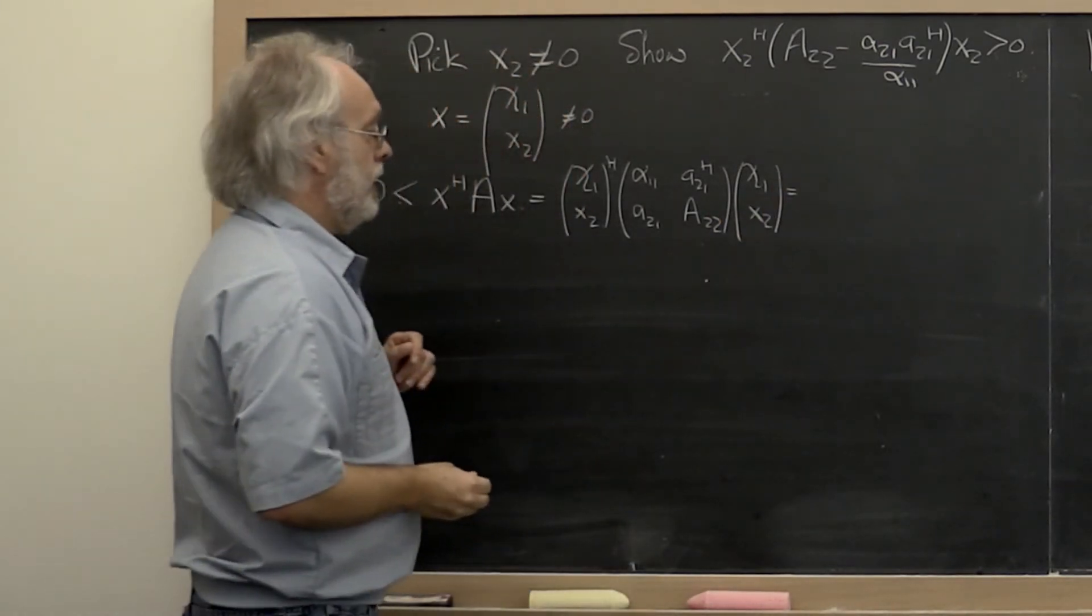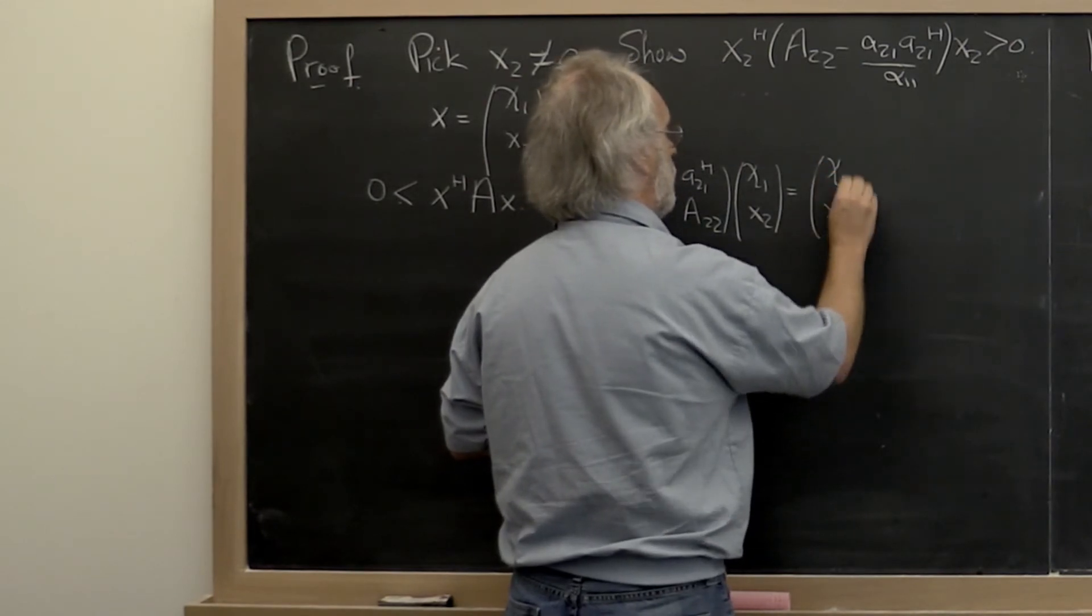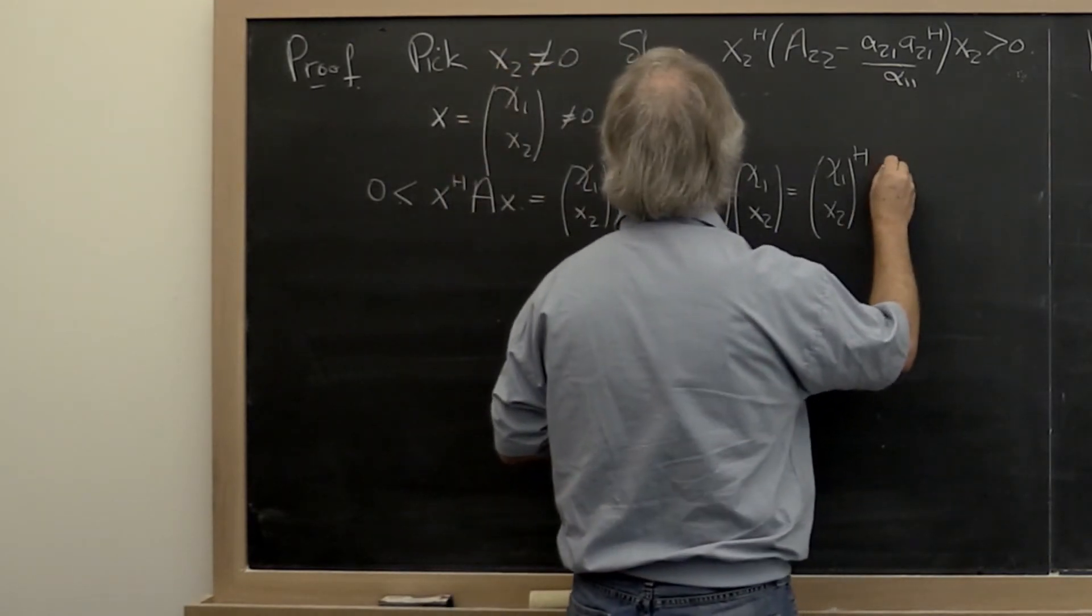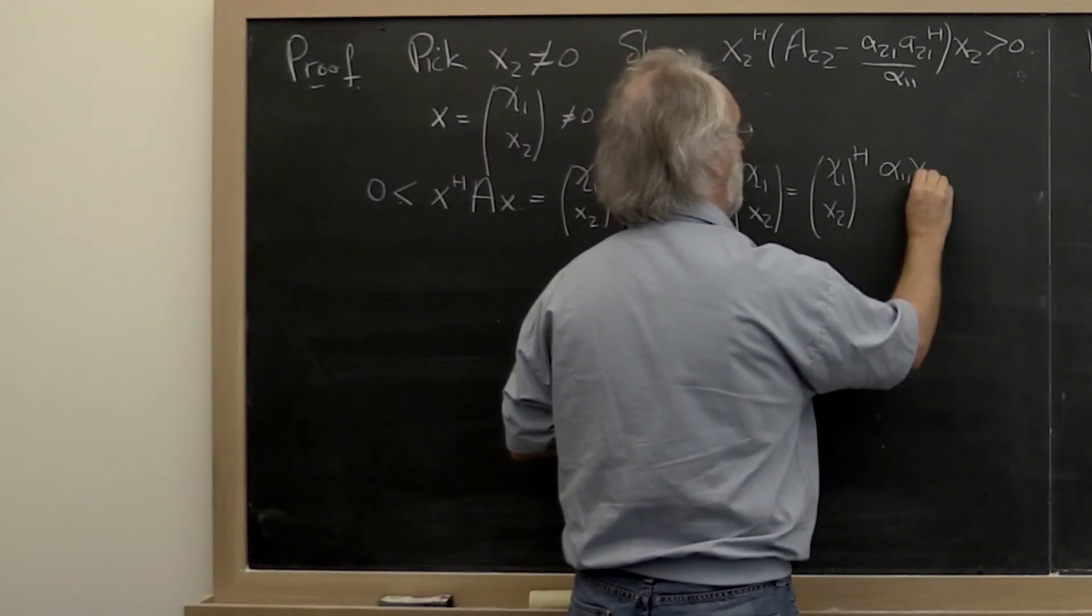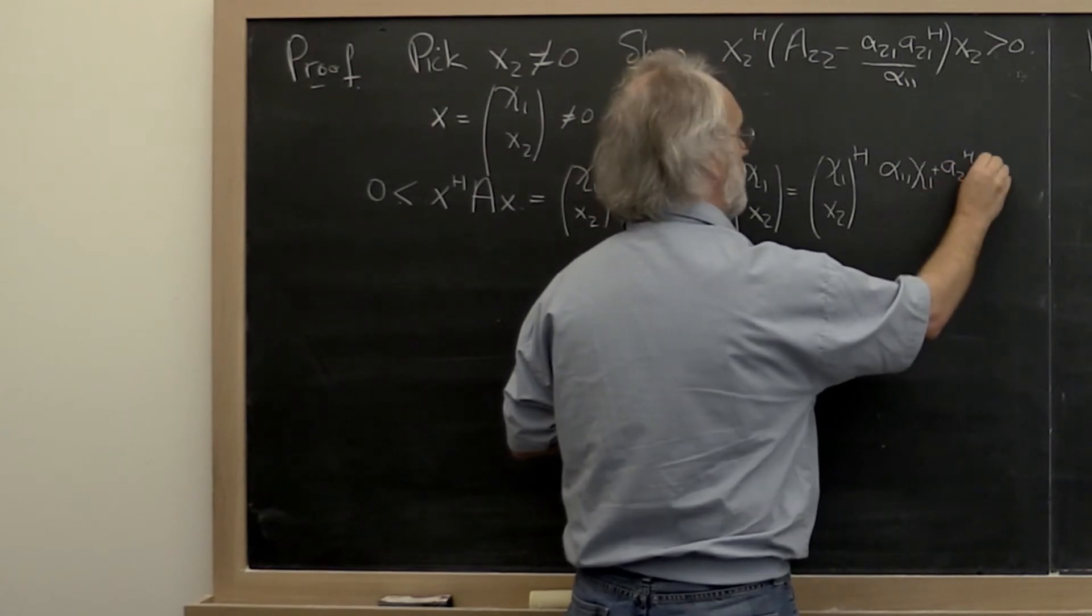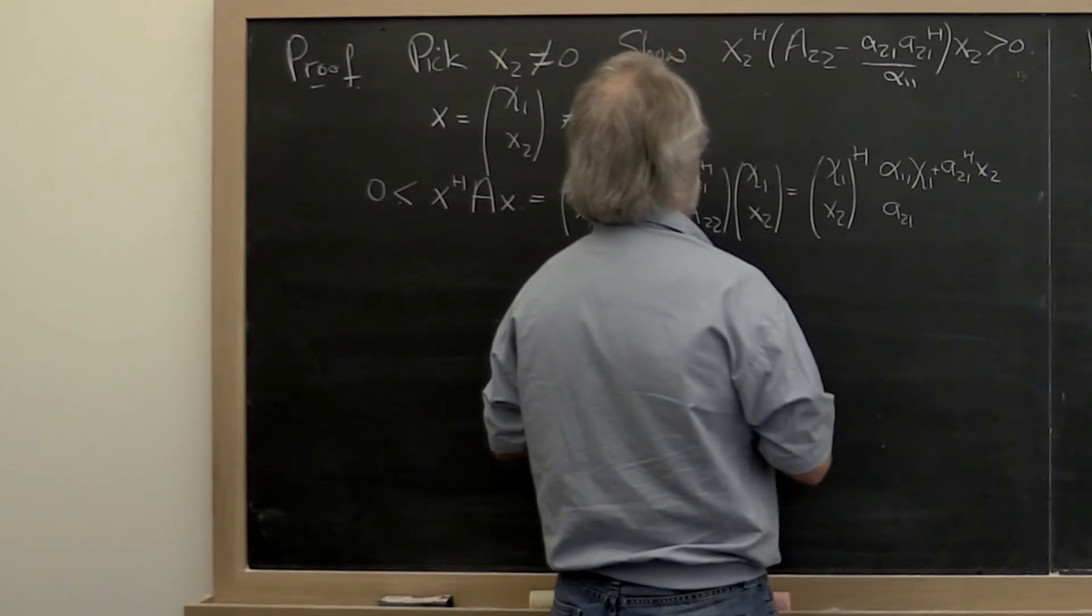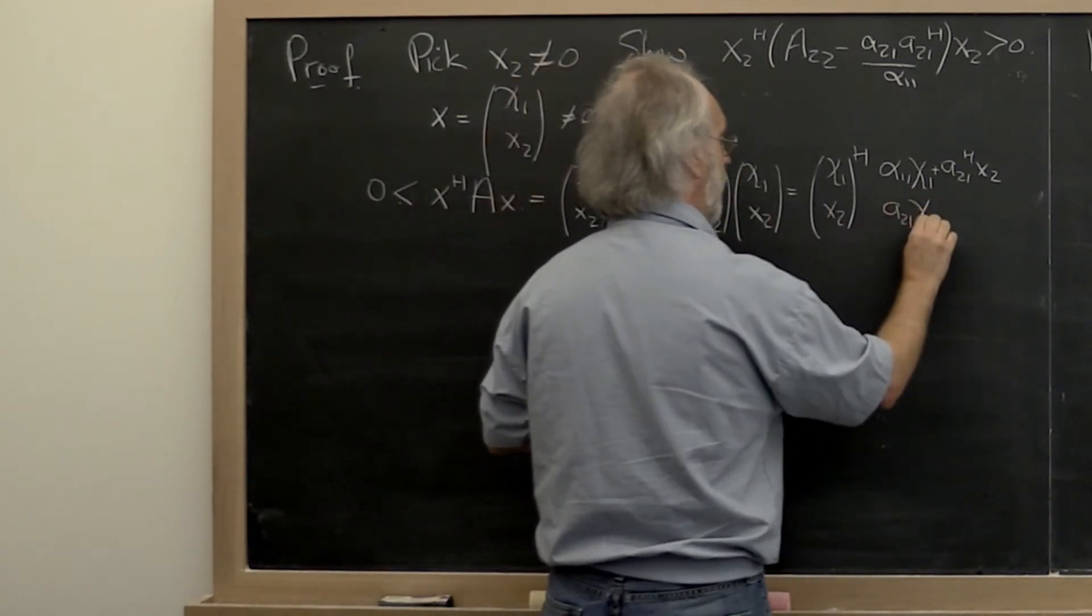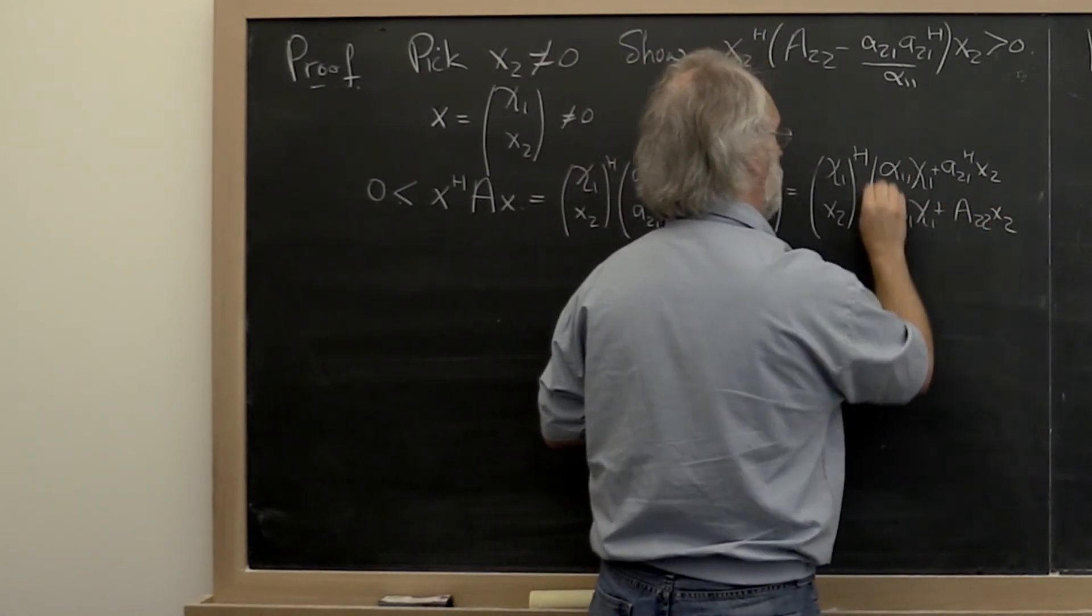And if you multiply all of that out, let's see, the first step is to say, let's leave this alone and let's multiply this out. The top becomes alpha 1 1 chi 1 plus A 2 1 Hermitian transpose times x2. And the bottom becomes A 2 1 times chi 1 plus A 2 2 times x2.